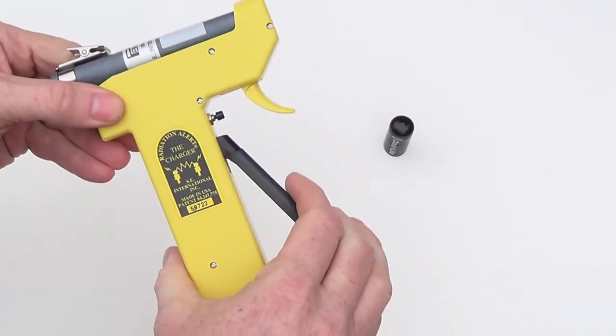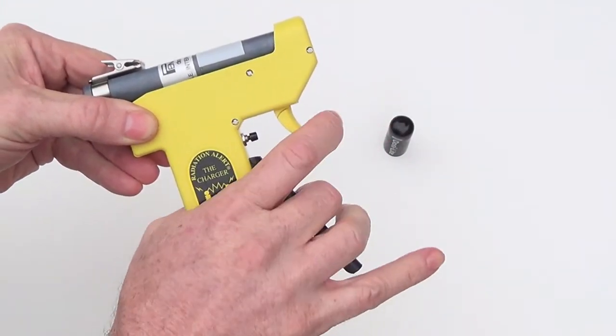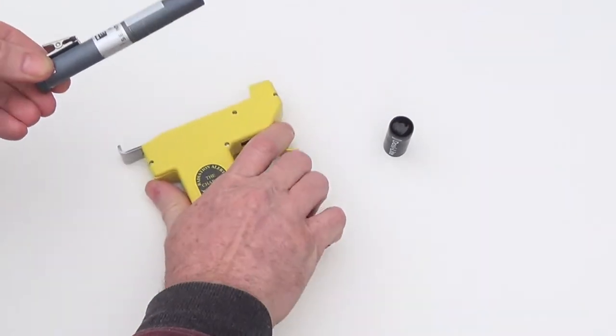Use the large charging lever to charge the pen dosimeter. Use the small button to discharge if you go past zero. To disengage, pull the trigger and it releases the pen dosimeter.